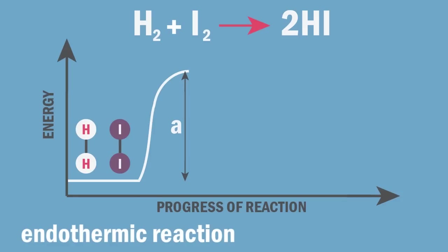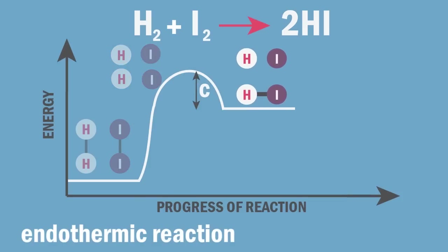A is the activation energy which is the energy taken in to break the H-H and the I-I bonds in the reactants. C is the energy given out when the new H-I and H-I bonds make to form the products.